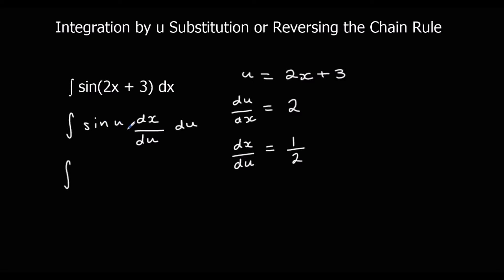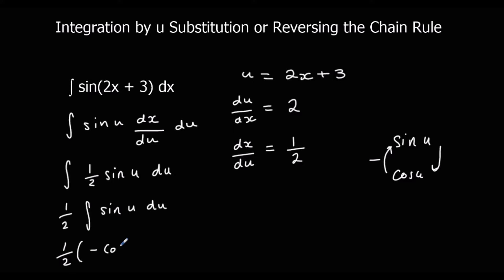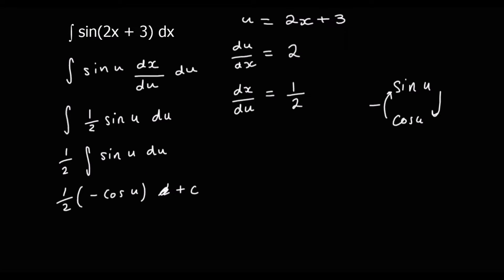So that means we're integrating sin u times one half, or one half sin u with respect to u. We can take the half outside and say one half times the integral of sin u with respect to u. Integrating sin u anti-clockwise gives us negative cos u, so that will be one half times negative cos u plus c. We can write this as negative one half cos u plus c.